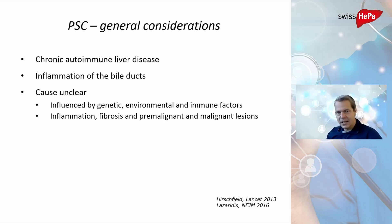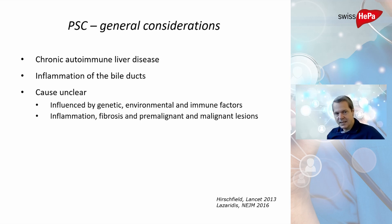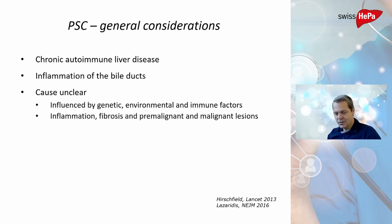PSC is a chronic autoimmune liver disease. It usually goes together with inflammation of the bile ducts — meaning the bile ducts are chronically inflamed — and wherever in the body you have chronic inflammation, you have a higher risk of developing cancer. The causes of PSC are unclear. We know that it's influenced by genetic factors and environmental factors, and somehow the immune system plays an important role.